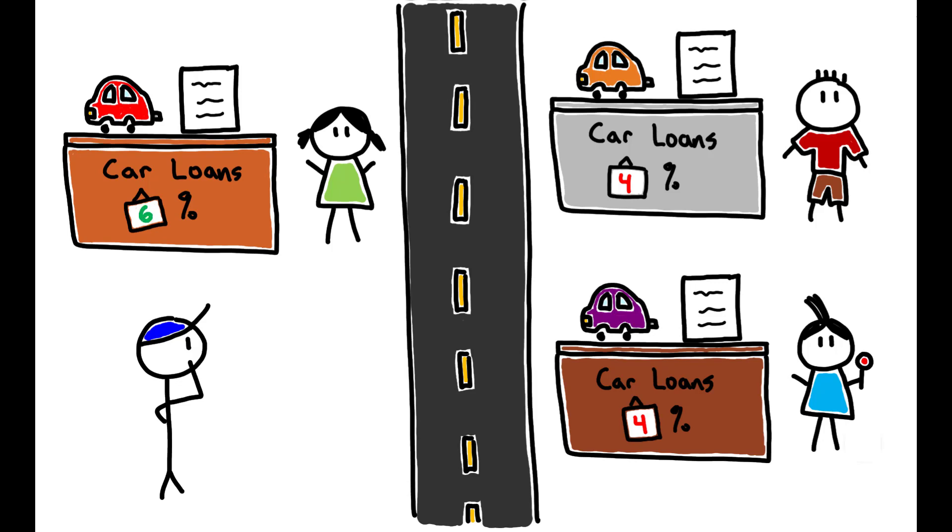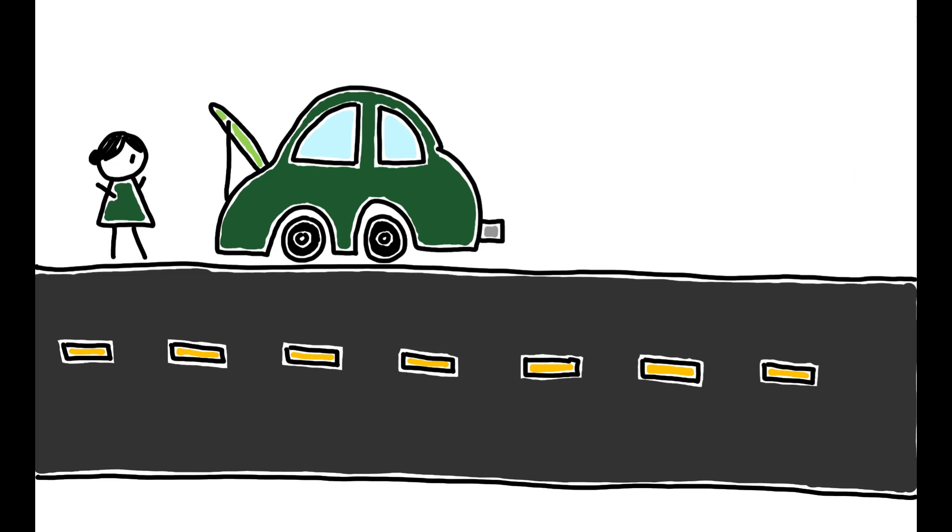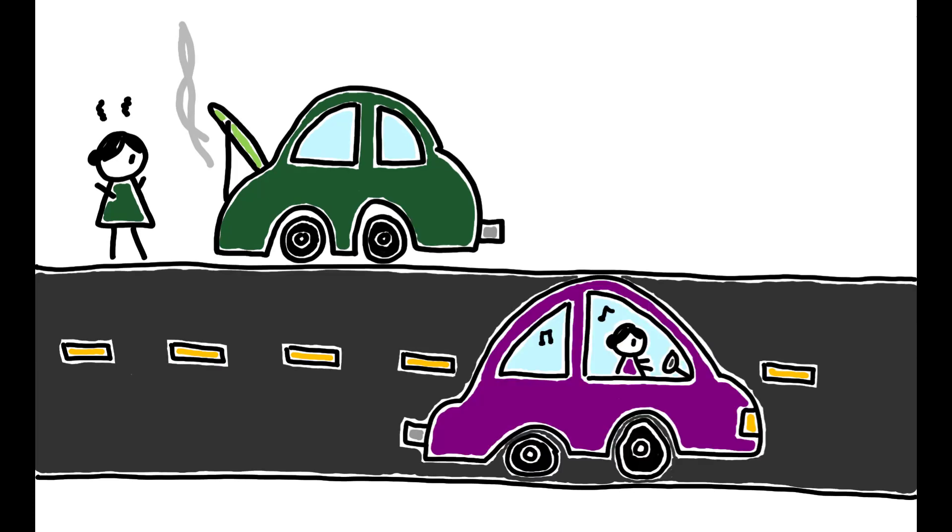Importantly, the authors show that this dispersion has very real consequences for borrowers. Those who are offered and accept high interest rates because they lie just to the left of a pricing threshold end up purchasing less expensive and older cars than they otherwise would have, and using less financing in their purchase.